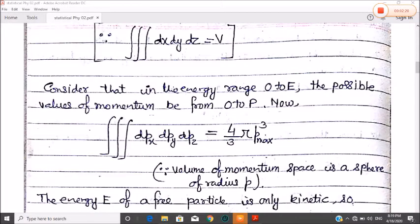Now consider that in the energy range zero to capital E, the possible value of the momentum is from zero to P. This value is V.